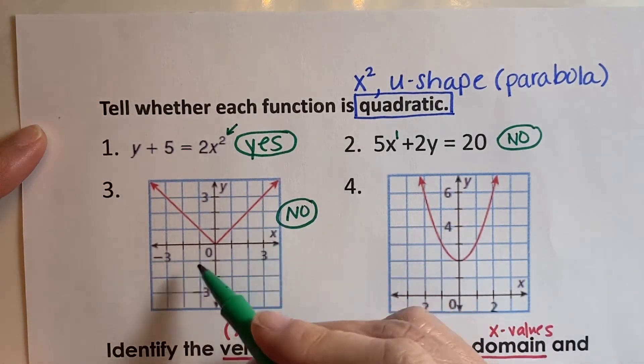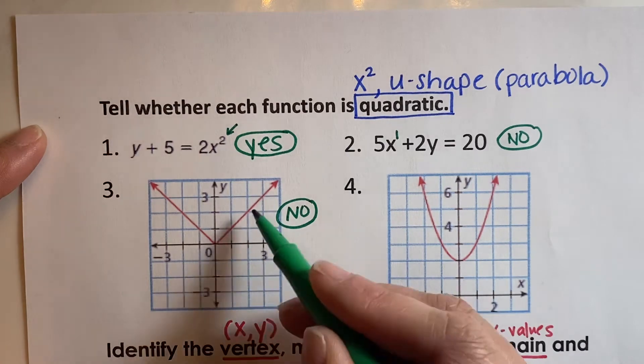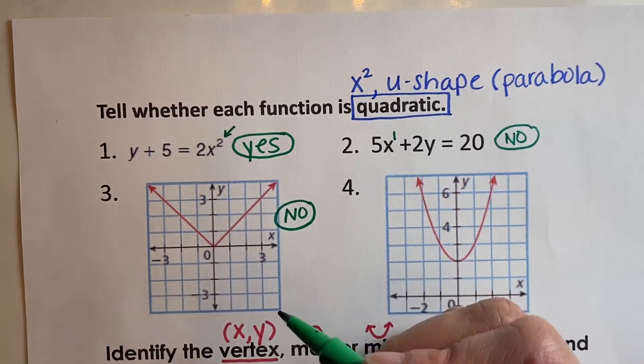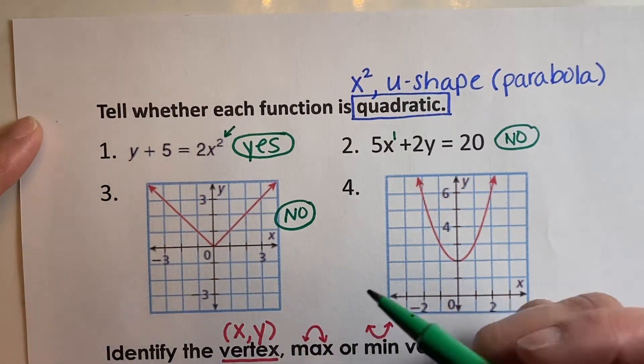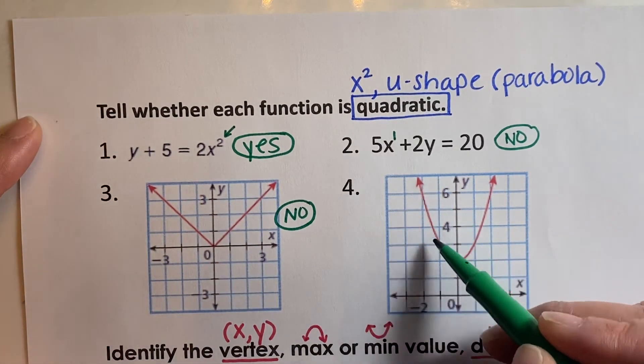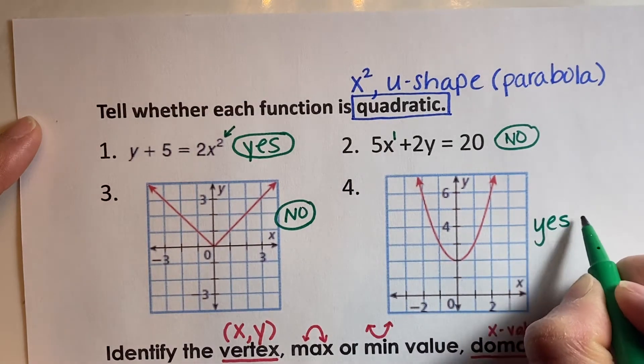If it was a linear function, it would be a straight line — that would not be quadratic either. A u-shaped graph facing up is quadratic.